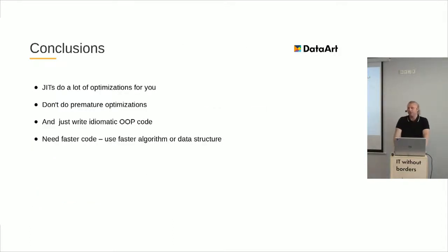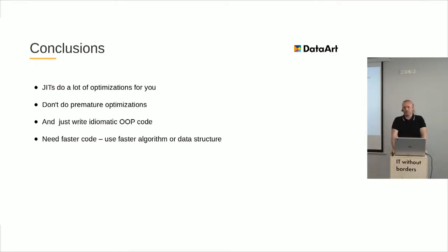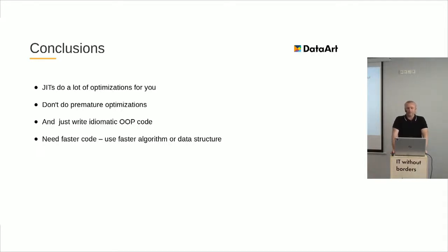The main conclusion of these optimizations is that the just-in-time compiler does a lot of optimizations for us for free. The main idea is: don't do premature optimizations, because in most common cases, the JIT compiler will provide more efficient code than we may write. The core advice is to just write idiomatic, object-oriented code. If we need more performance, just try to use a faster algorithm or another data structure.